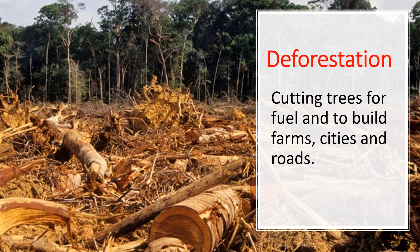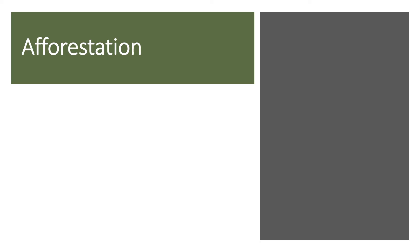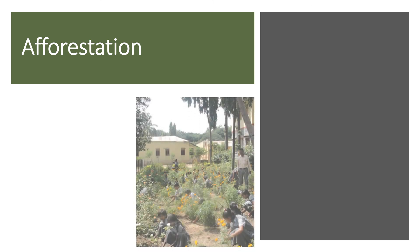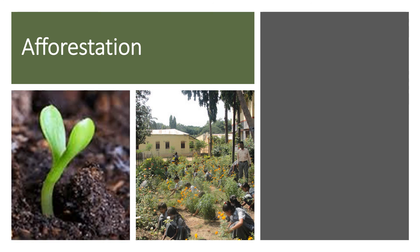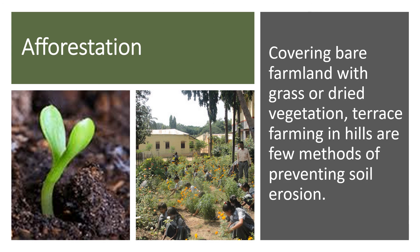We can prevent soil erosion by afforestation. Planting trees is the most important method of preventing soil erosion. Covering bare farmland with grass or dried vegetation, terrace farming in hills, and building embankments along river banks are some of the other methods of preventing soil erosion.